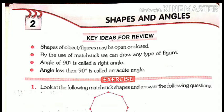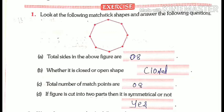Now the exercise is starting from textbook page number 8. Let us look at question number 1: look at the following matchstick shapes and answer the following questions. A shape is given here which you will also find in the textbook. Let us count the number of sides: 1, 2, 3, 4, 5, 6, 7, 8. This figure is made by joining 8 sides, and an 8-sided figure is called an octagon.